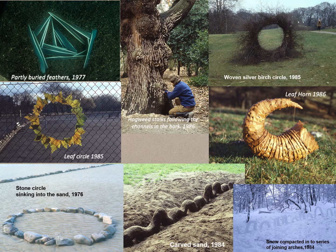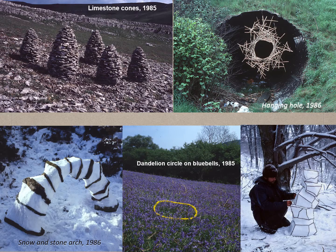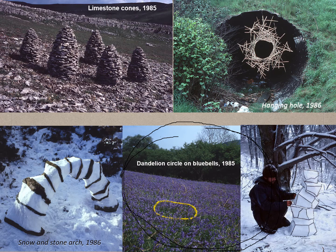So last of all I'm just going to show you some beautiful examples that might get your imaginations going. If we have a look at this piece down here — dandelion circle on bluebells. How cool is that? So it's a line of dandelions within a sea of bluebells. Is this something that you could maybe create on the lawn perhaps? Maybe with daisies?